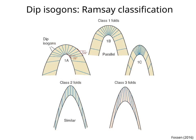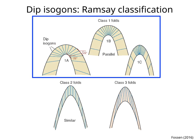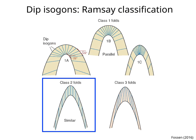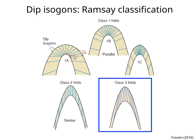We can classify folds based on their dip isagons. This is known as the Ramsey classification of folds. Class 1 folds have convergent dip isagons. Class 2 folds have parallel dip isagons. And Class 3 folds have divergent dip isagons.